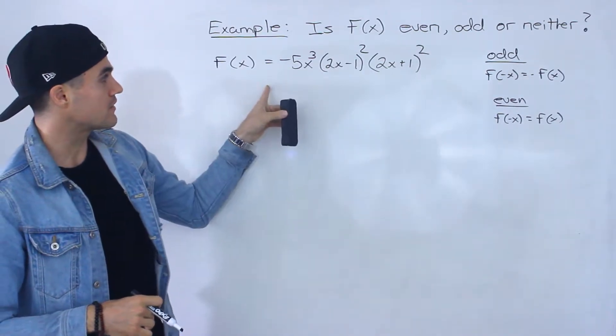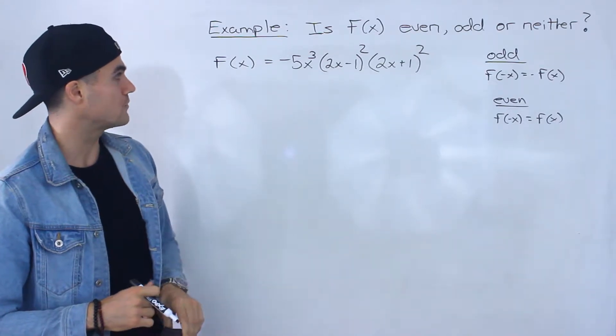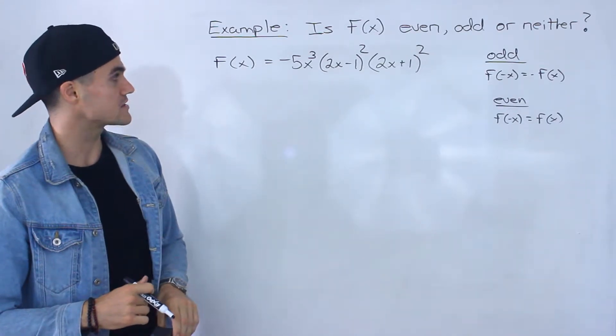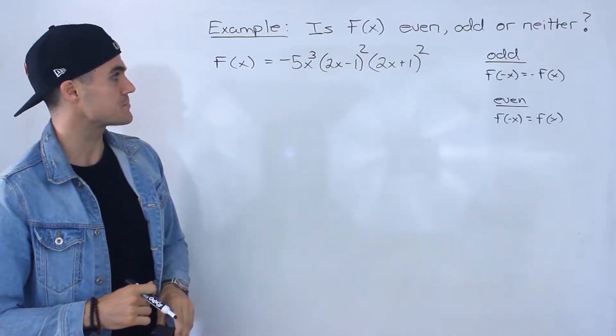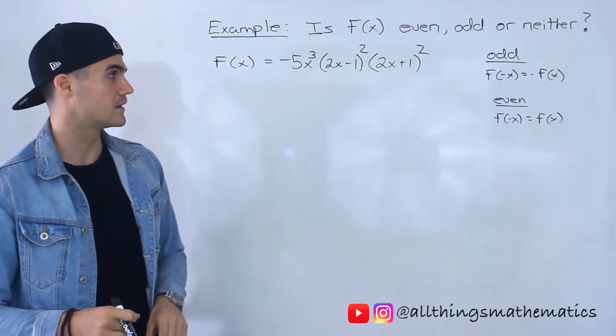So we have this polynomial in factored form: negative 5x to the 3, times 2x minus 1 squared, times 2x plus 1 squared.